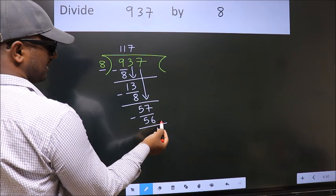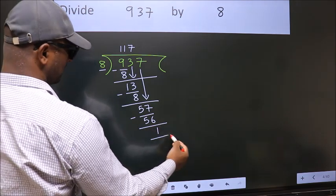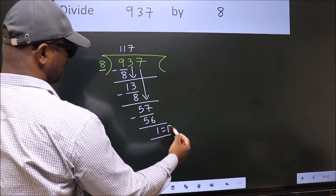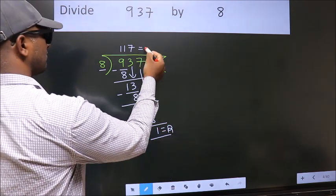No more numbers to bring it down. So we stop here. This is our remainder. This is our quotient.